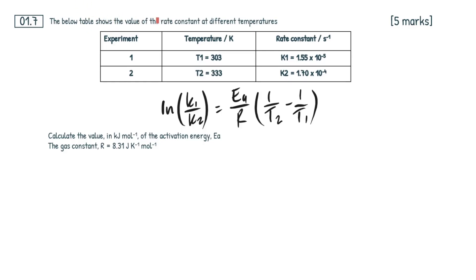The below table shows the value of the rate constant at different temperatures. So we have two experiments here, experiment one and experiment two, with varying temperatures and varying rate constants.